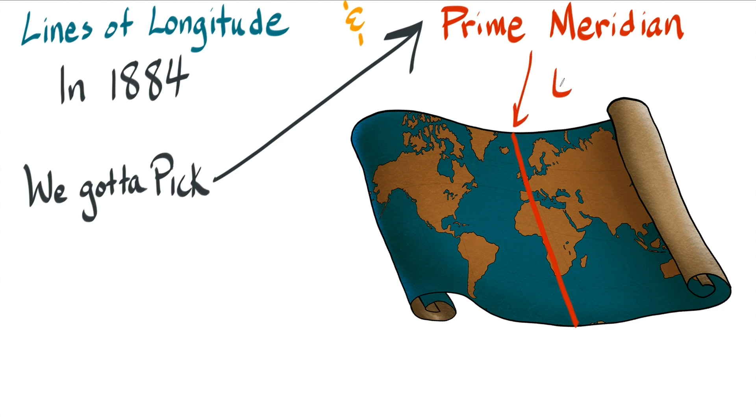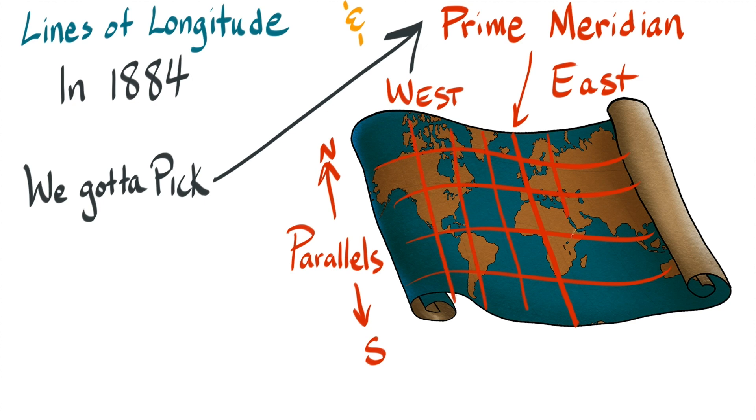Everything to the east is in the Eastern Hemisphere, and everything to the west of it is in the Western Hemisphere. So meridians allow us to measure how far east or west something is, and parallels allow us to measure how far north or south something is. When you combine these, you can find out exactly where something in the world is.